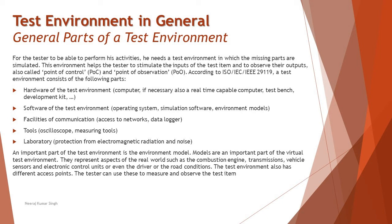According to ISO IEC IEEE 29119, a test environment consists of the following parts, though depending on your standards you may have additional items. These include: hardware of the environment such as computers, real-time capable computers, test benches, development kits; software of the test environment such as operating systems, simulating software, and environment models; communication facilities like network access and data loggers for collecting outputs; tools such as oscilloscopes and measuring tools for monitoring; and a laboratory providing protection from electromagnetic radiation and noise.